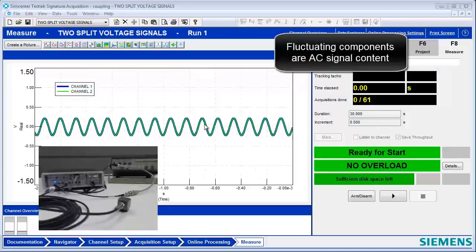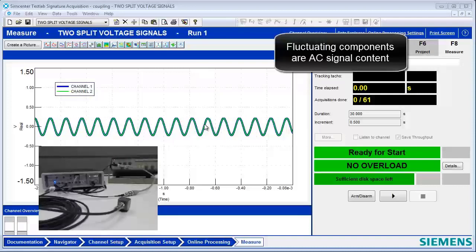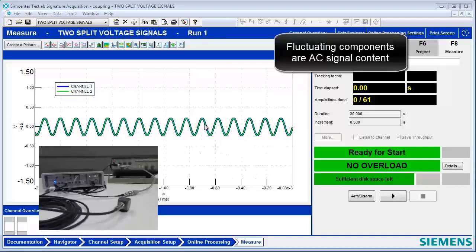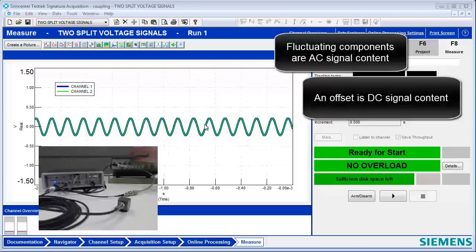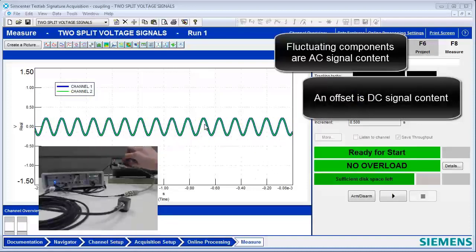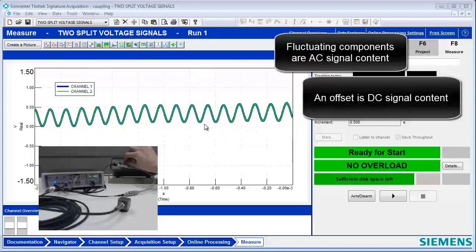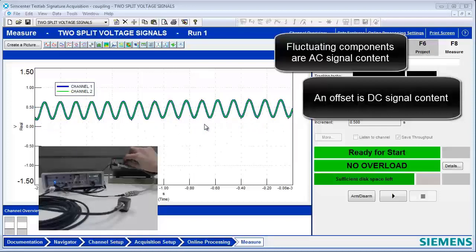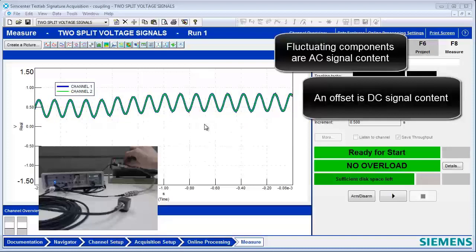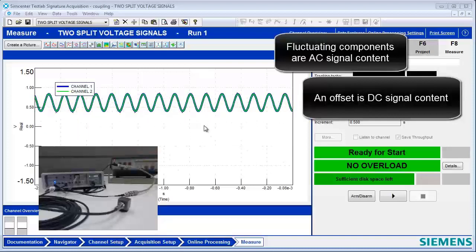We have this hooked up to a signal generator, right? And if we wanted to see a DC component on this signal, what would you do? All we have to do is go to the DC offset dial on our signal generator and move it. Look at that, it's rising up. So you've added a DC offset onto this signal.